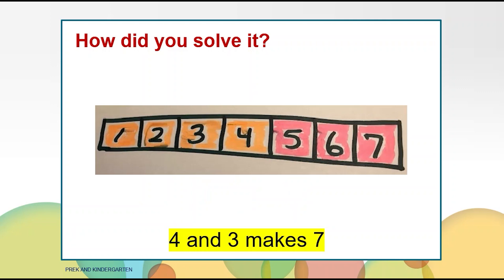Maybe you used a number track from one to seven because you knew there were seven vegetables altogether. Then you colored four numbers for the four carrots. That left you with three peppers. Four parts and three parts make seven, which is the whole.